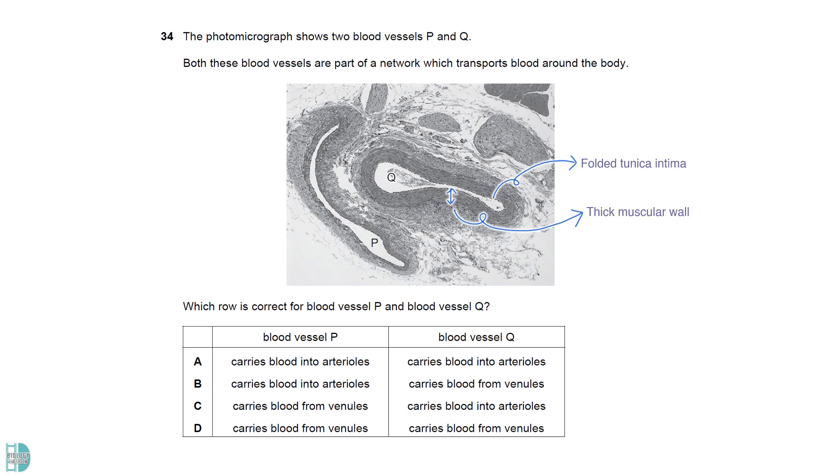Q has a thick muscular wall and folded tunica intima. It is an artery. P has a thinner wall and smooth tunica intima. It is a vein. So, P carries blood from smaller veins, called venules, and Q carries blood to the smaller arteries, called arterioles.